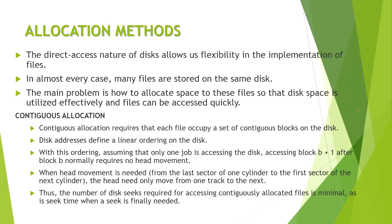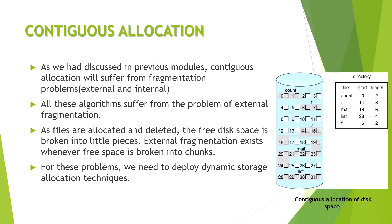For allocation methods, contiguous allocation stores all contents in a continuous manner, taking the least seek time. In one rotation of the disk header, all contents are retrieved. As shown in the diagram, blocks are stored at positions 0, 1, 2, then 6, 7, and then 14, 15, 16, 17 — these are continuous strings stored on disk.